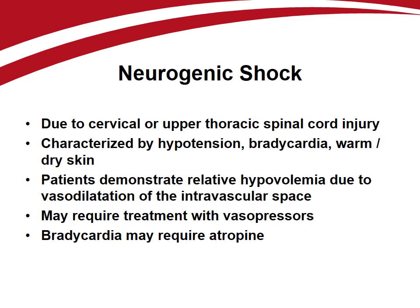Neurogenic shock occurs as a result of cervical or upper thoracic spinal cord injury with hypotension, bradycardia, and warm dry skin due to loss of sympathetic tone. Although euvolemic, these patients demonstrate relative hypovolemia due to vasodilatation of their intravascular space. If hypotension does not respond to volume resuscitation, vasopressors may be required to increase vasomotor tone. Bradycardia may be corrected with atropine. In the trauma patient, hemorrhage should always be excluded before attributing shock to a neurogenic source.